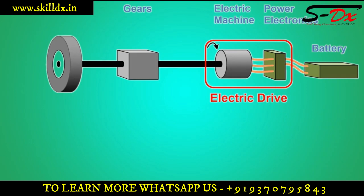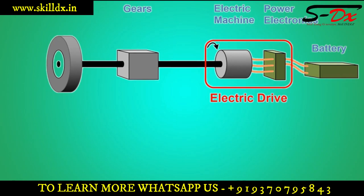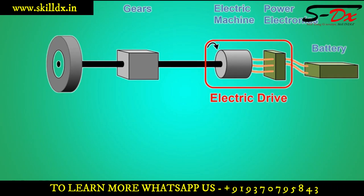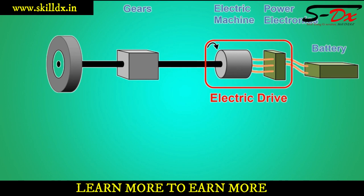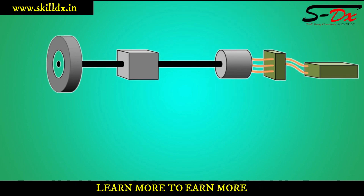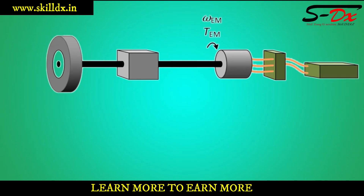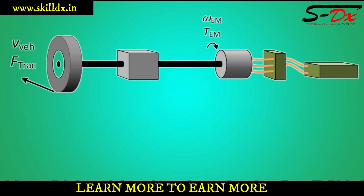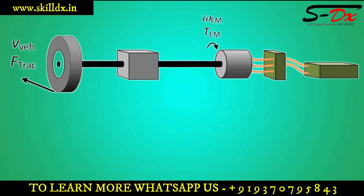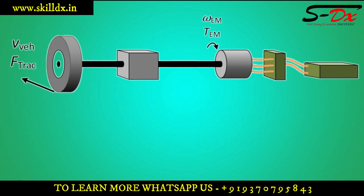We have become so used to doing it that we often do not reflect over it. When we discuss the combustion engine, we always assume the fuel injection system and the ignition system to be a part of the engine. Now we have a drivetrain which in one end has the electric machine's torque and shaft speed, and in the other end the traction force and the vehicle speed. Just like for the combustion engine powertrain, we can describe how the torque and speed of the electric machine relate to the traction force and vehicle speed with the transmission model.